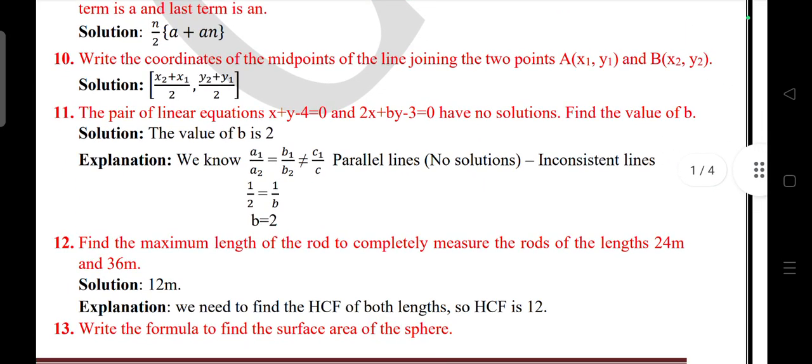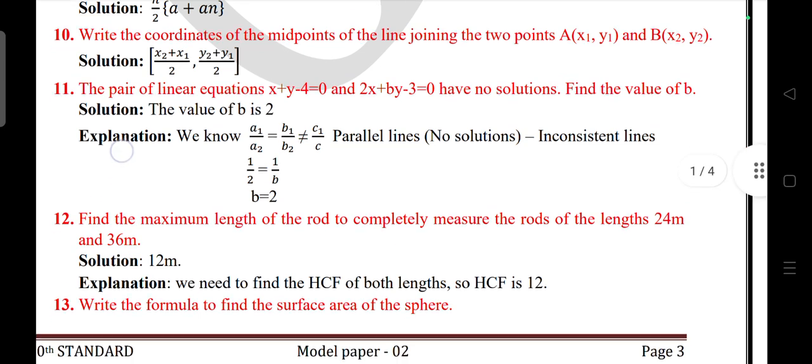Question 11: The pair of linear equations x + y - 4 = 0 and 2x + by - 3 = 0 have no solutions. Find the value of b. Answer: The value of b is 2. Question 12: Find the maximum length of the rod to completely measure the rods of length 24 meter and 36 meter. Answer is 12.